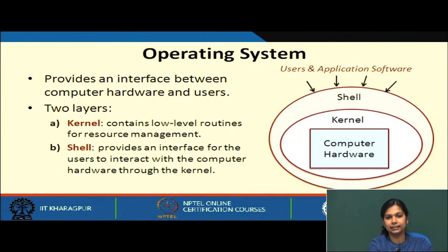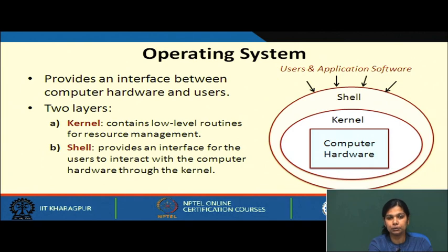What is an operating system? It is a system software that provides an interface between the computer hardware and the user. The hardware includes the processor, memory, and input/output devices. The user interacts with the hardware through the operating system, which sits in between — the hardware and the user talk to each other through the operating system.